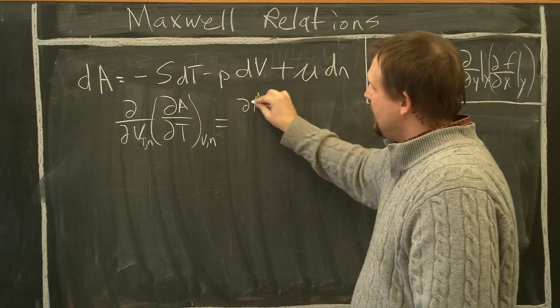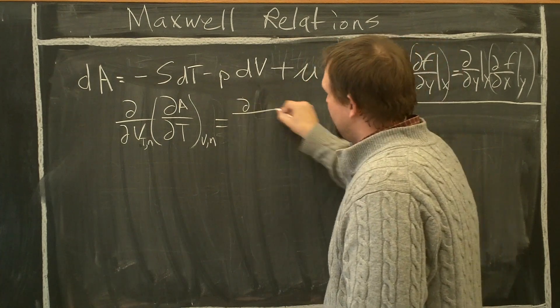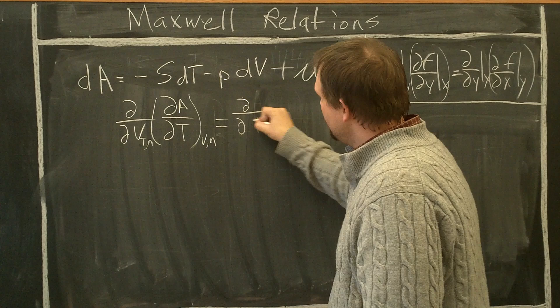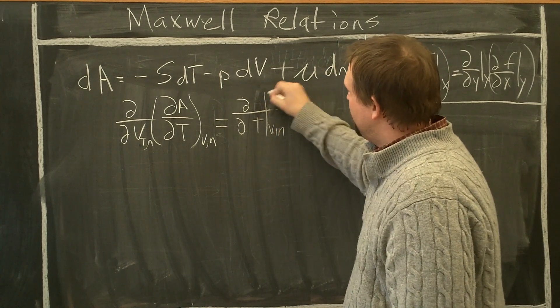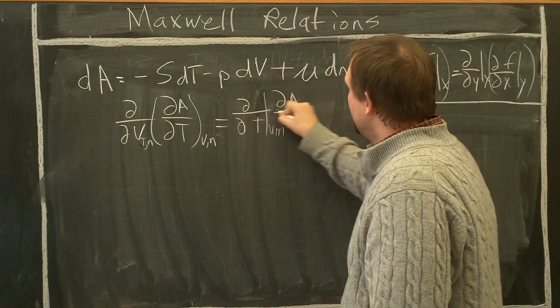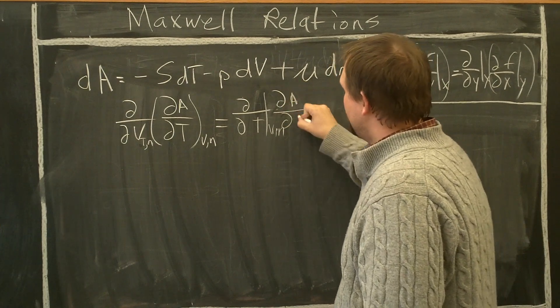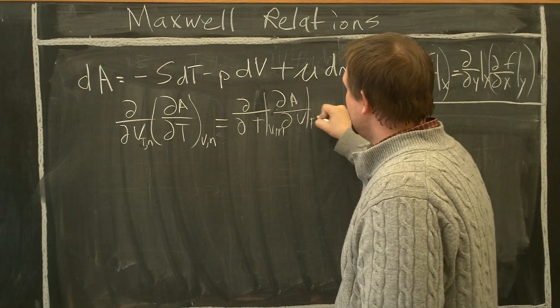So we can go with partial A with respect to V at constant T and N, and partial A with respect to partial V, constant T, N.